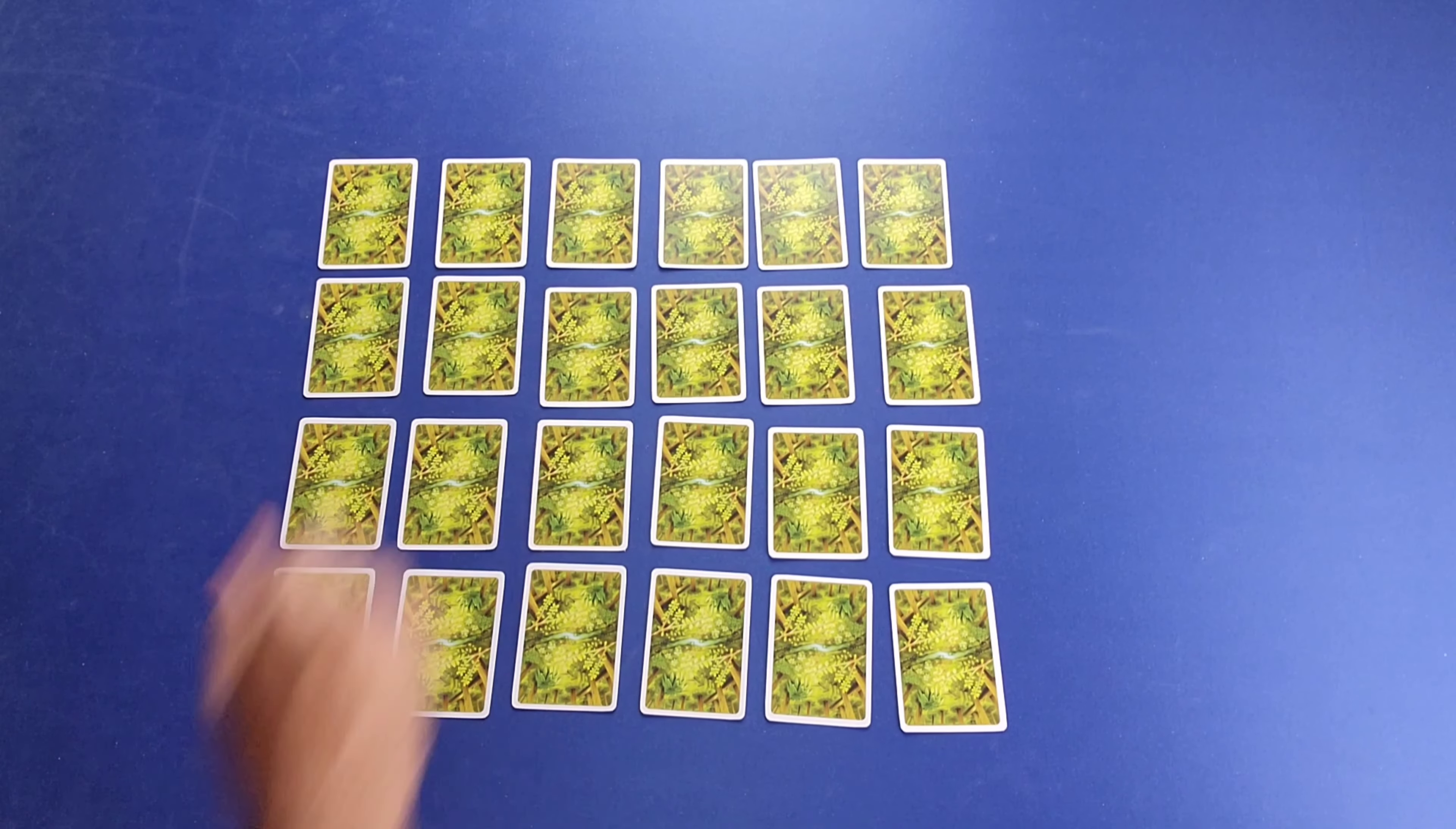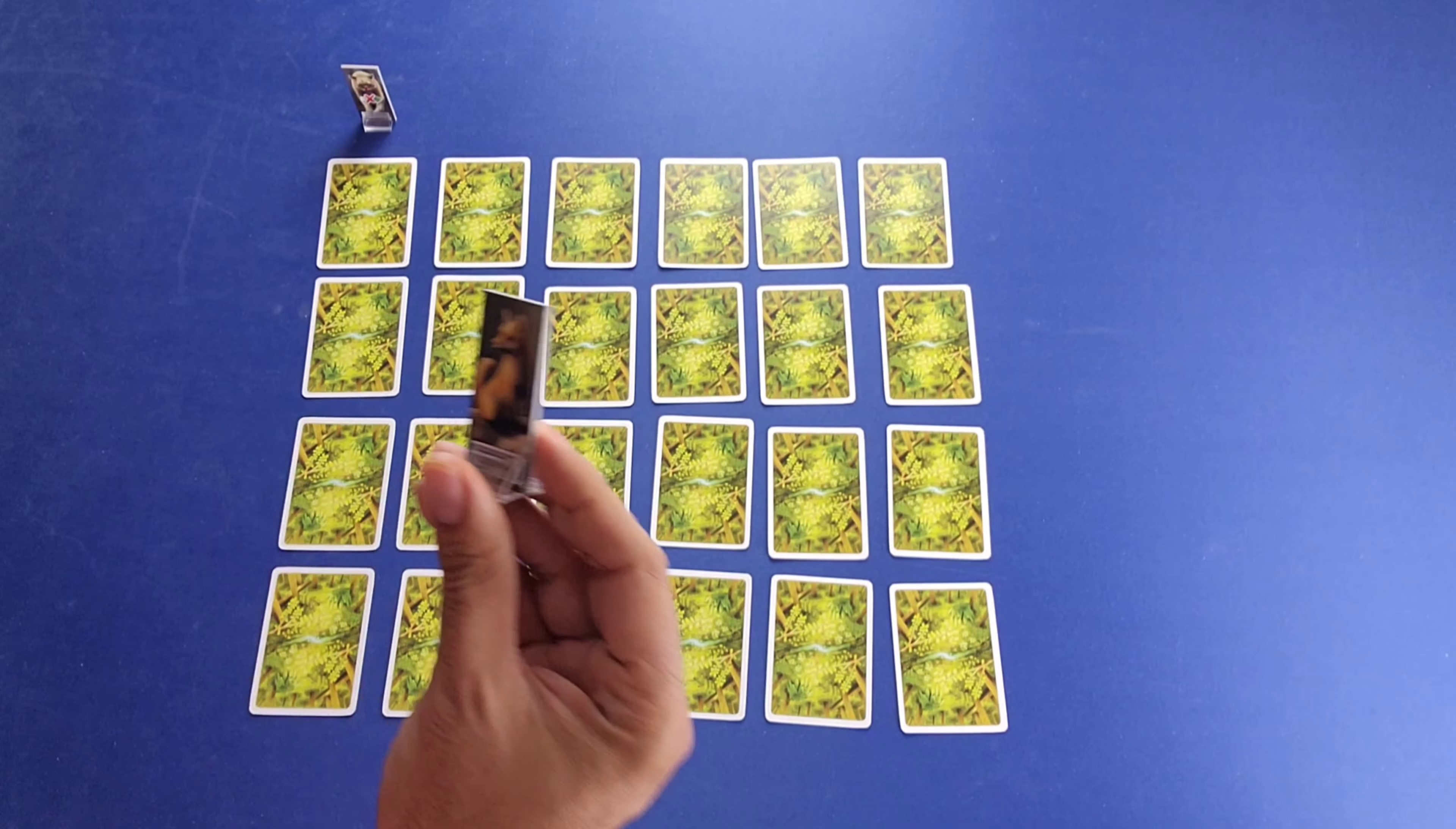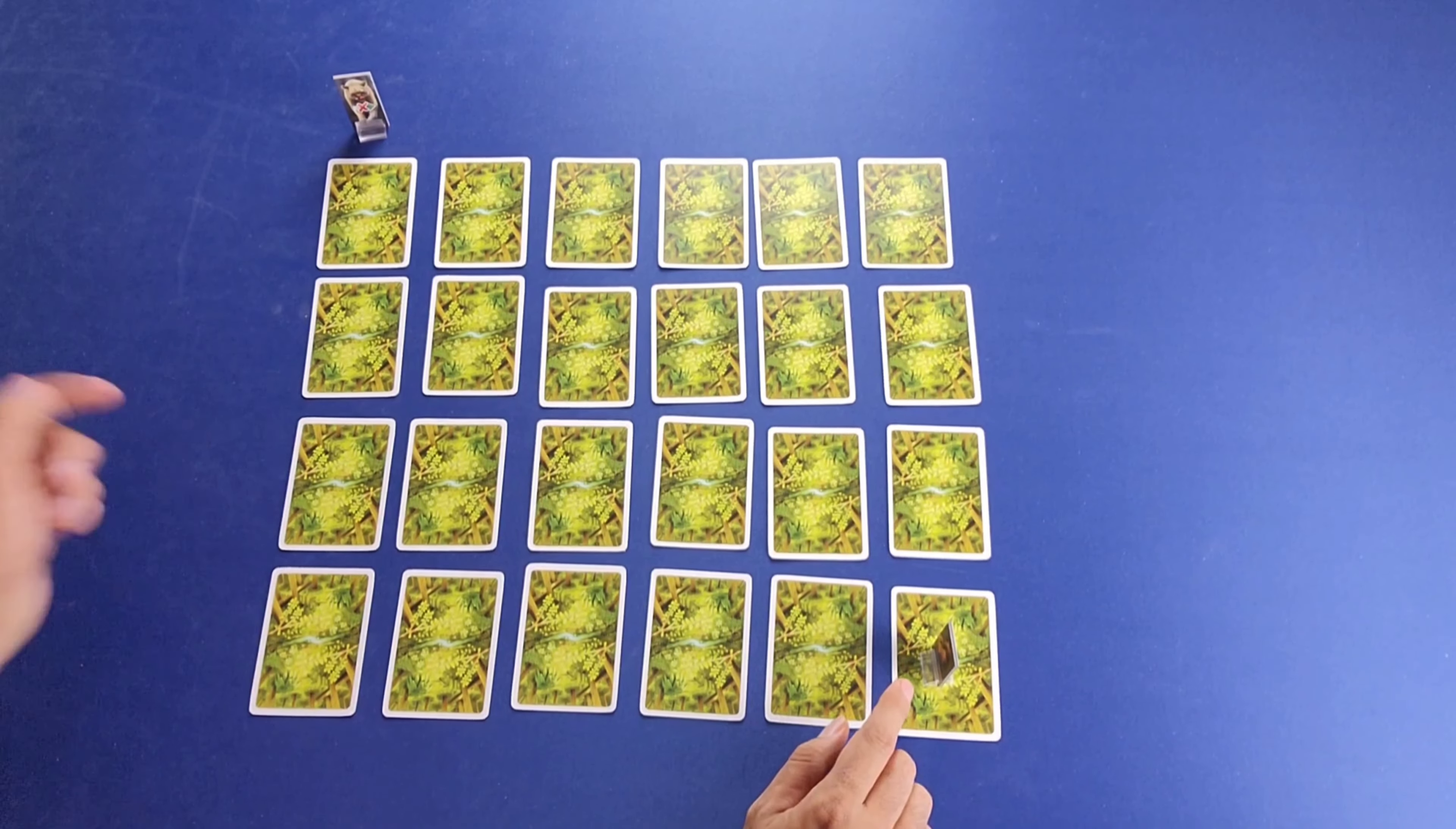Once you have your 6x4 grid created, you're going to locate your Mountain Lion Standee and place it here on the top left column of these six columns of cards here. Then you're going to locate your Red Fox Standee here, and you're going to place it on the lower right card. Remember, the Mountain Lion is going to go right above this column of cards, while the fox will go on top of the actual card itself.